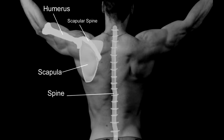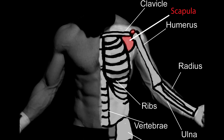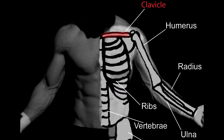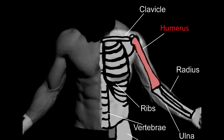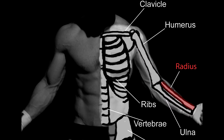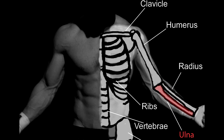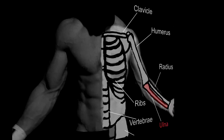Next, we'll take a look at your scapula, which is commonly referred to as your shoulder blade. From there, notice your clavicle. And then we're going to jump over to the bone of your arm, which is referred to as your humerus. There are two bones that make up your forearm: one of which is the radius, and the other is called the ulna. The bones of your hands are referred to as the carpals and metacarpals.